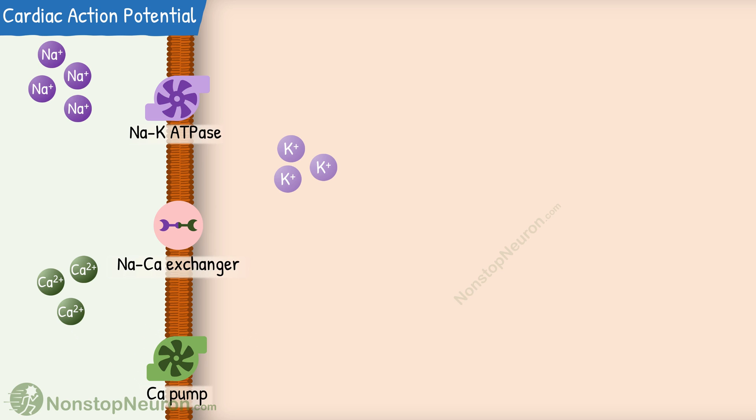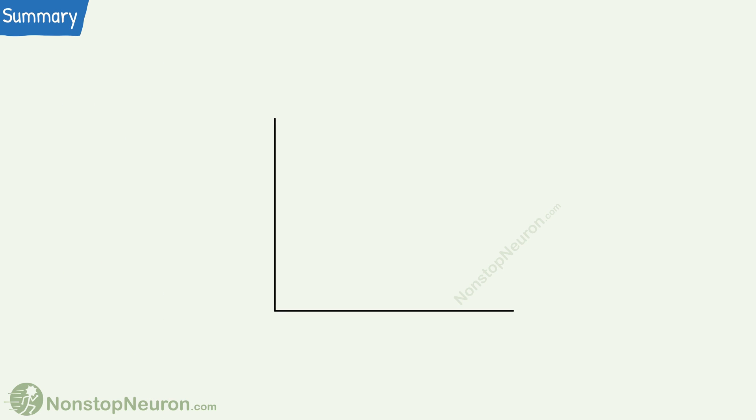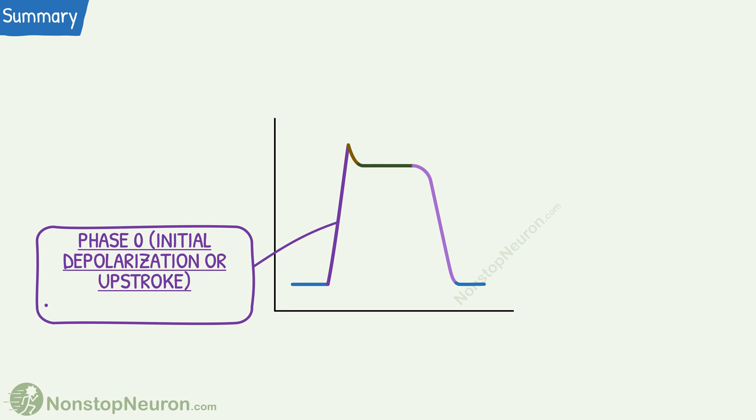So this was all about the action potential in cardiac muscle. Now let's have a quick summary. Action potential in cardiac muscle has 5 phases. Phase 0 is due to the opening of fast sodium channels and rapid influx of sodium.